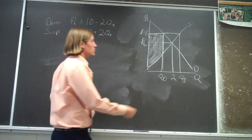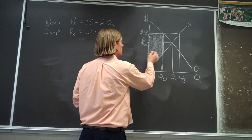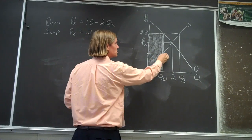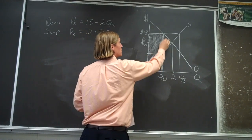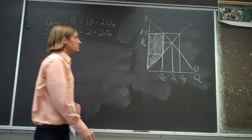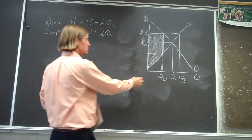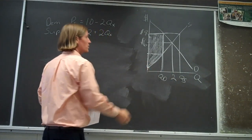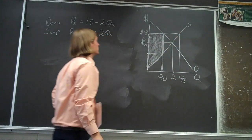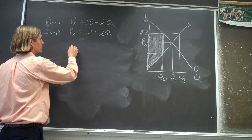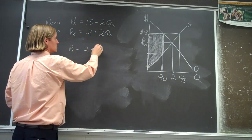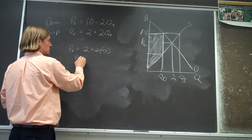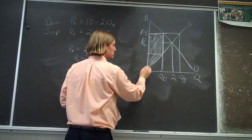How are we going to calculate that? One way is to figure out this point, this point, and this point, and from that determine this area and the area of this triangle. This point is probably the easiest — we know the quantity here is zero. Going back into our supply equation, what's the price when the quantity being produced is zero? That price should be two, so this intersection is two.